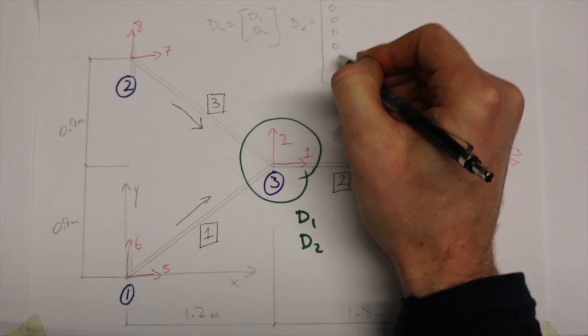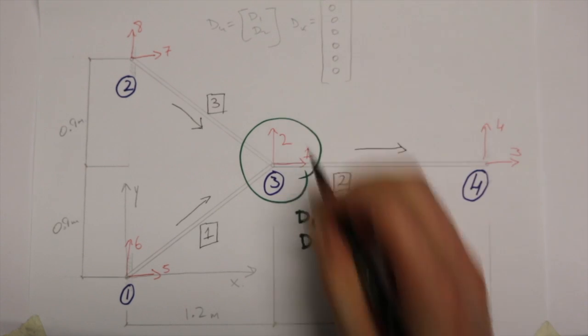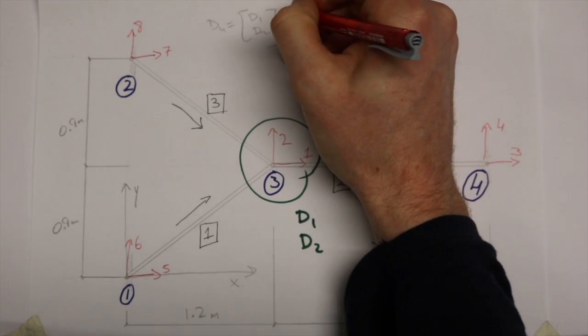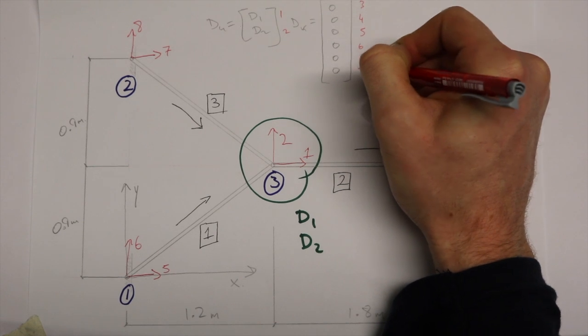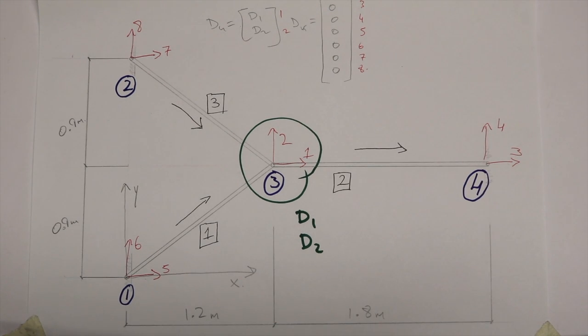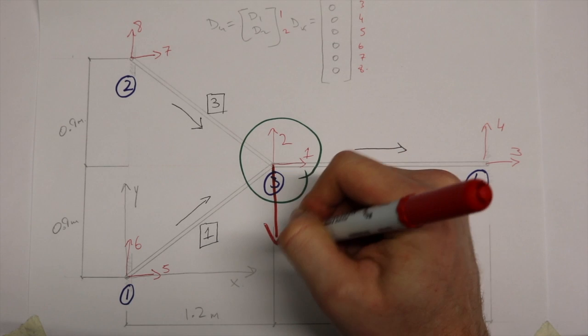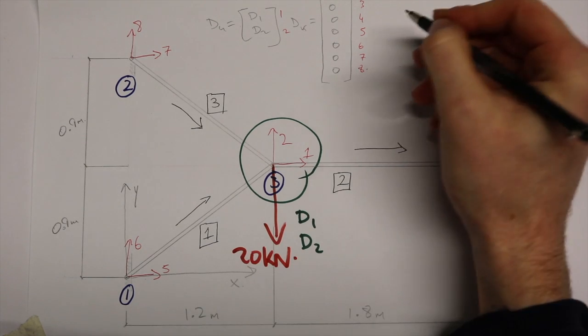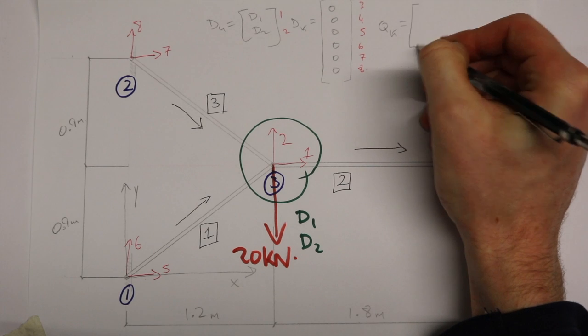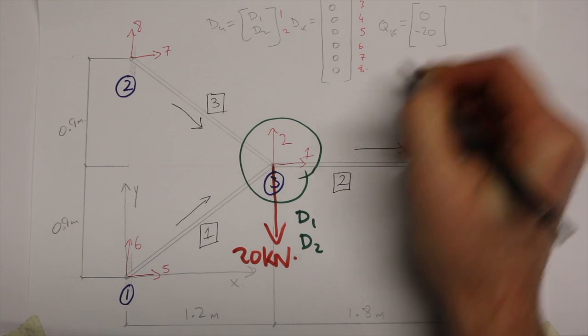There are no other displacements because all the other nodes are supported. The red numbered labels correspond to their respective degrees of freedom. There is also a 20 kilonewton load applied in a downward direction opposite to degree of freedom 2 at node 3.